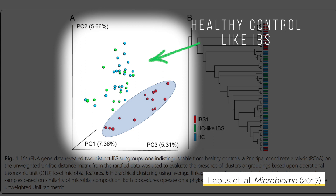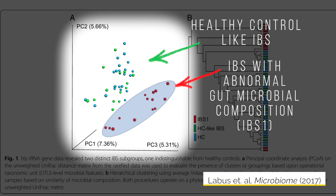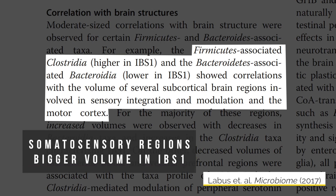We asked whether these alterations in the gut microbiota of one IBS subgroup were correlated with alterations at the brain level — at structural brain features. What we found was a difference: comparing the normal-microbiome IBS group to the abnormal-microbiome IBS group, certain brain regions were larger, particularly sensory brain regions — regions that receive input from the body — and they were larger in the patients with the abnormal gut microbes.